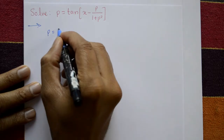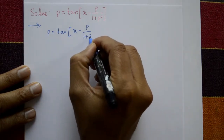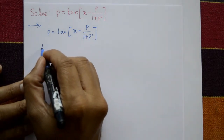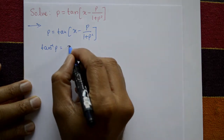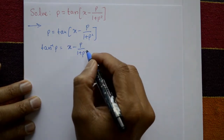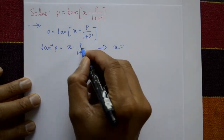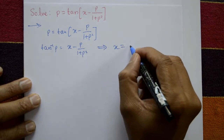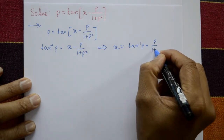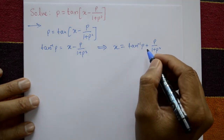The given equation is p = tan(x - p) / (1 + p²). Find the general solution. Shift tan to the other side: tan⁻¹(p) = x - p/(1 + p²). Rearranging, x = tan⁻¹(p) + p/(1 + p²). This is solvable for x only.